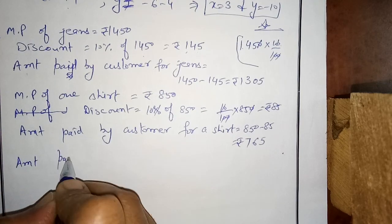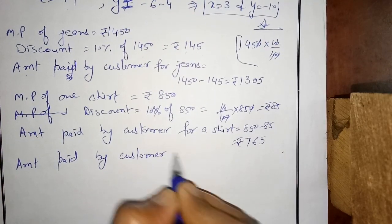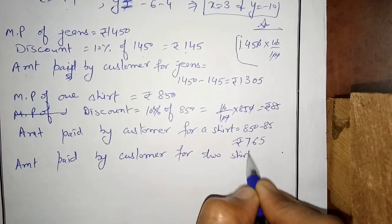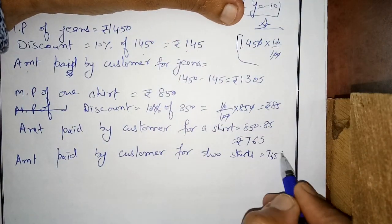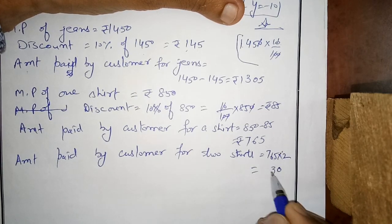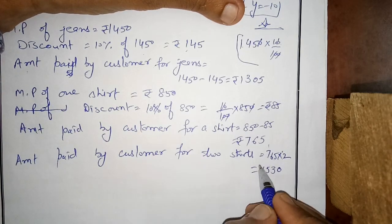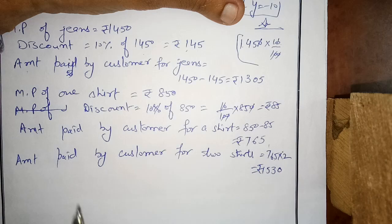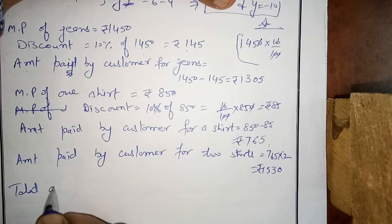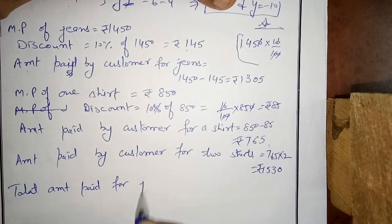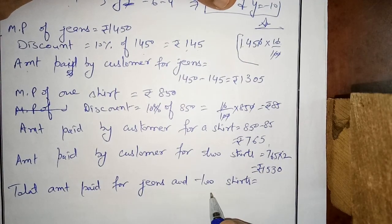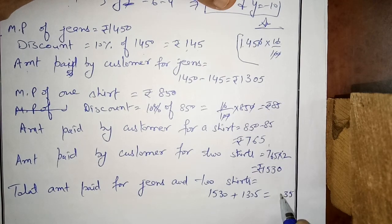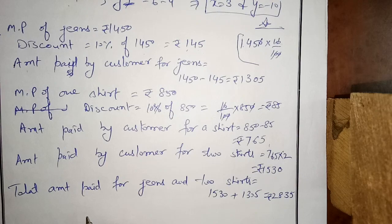He bought two shirts, so amount paid by customer for two shirts: multiply Rs. 7.65 by 2, giving Rs. 15.30. Now total amount paid for jeans and two shirts: 15.30 plus 13.05 equals Rs. 28.35. Check the answer — yes, this is the answer of this question.